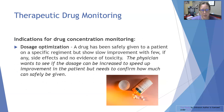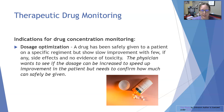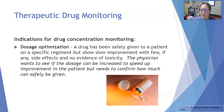The second indication is dosage optimization — essentially dosage adjustment. A drug has been safely given to a patient on a specific regimen, but there has not been enough improvement, with very few side effects and no evidence of toxicity. The physician may consider increasing the dosage to speed up improvements, while ensuring levels remain within safe amounts. The physician can increase the dosage and then recheck levels to confirm they are not toxic and are indeed therapeutic.